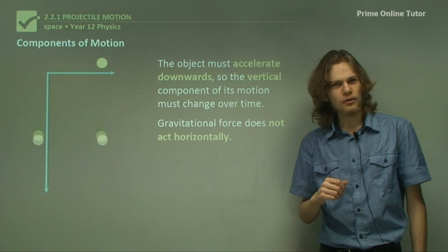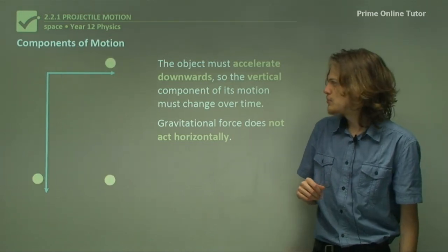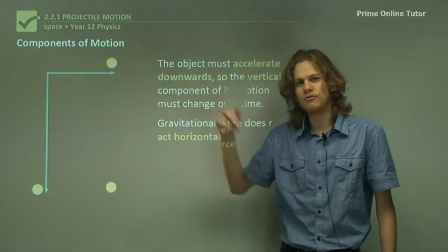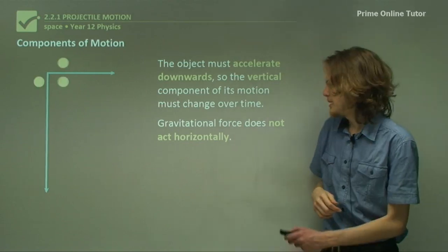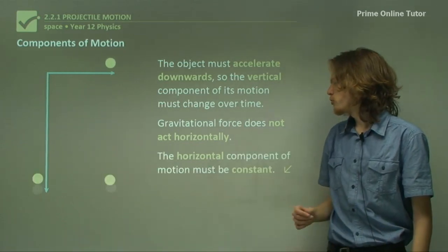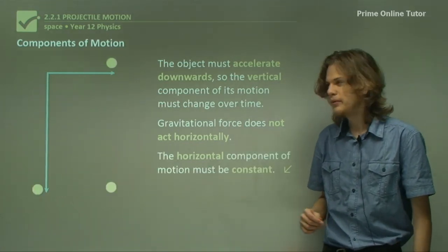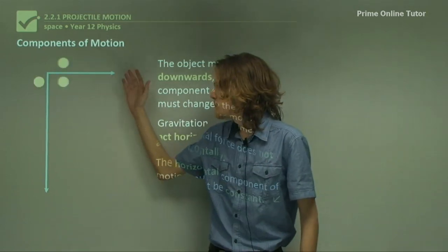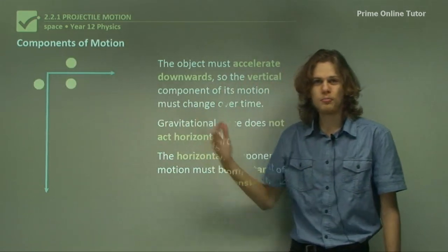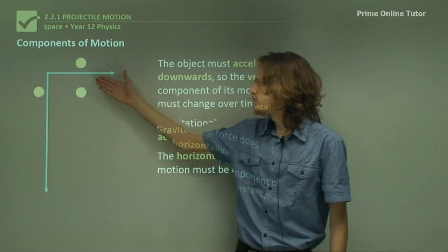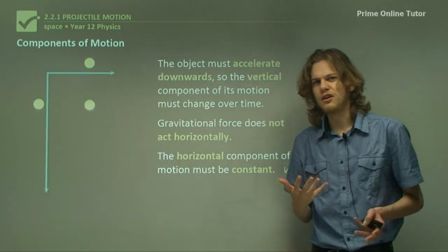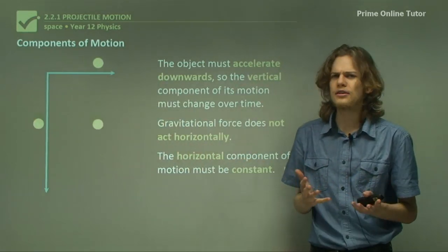Gravitational force does not act horizontally. So what does this mean for the horizontal component of motion? As I'm sure you can see, the horizontal component of motion is constant. It does not change. For the entire journey of the projectile, the horizontal motion does not change unless we start to consider things like air resistance and drag.